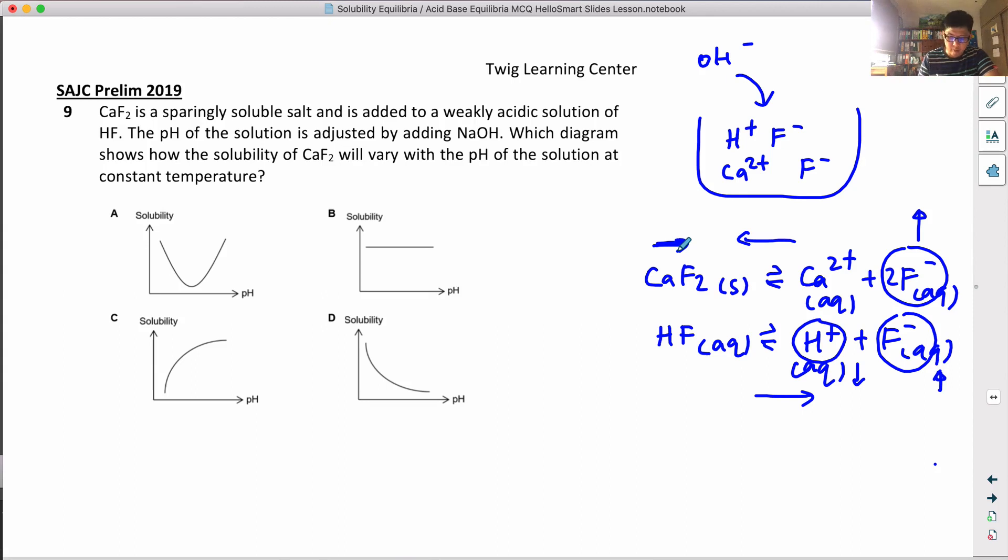From here, the answer has to be D. As you add OH⁻, the solubility of calcium fluoride will actually decrease, so it will drop.